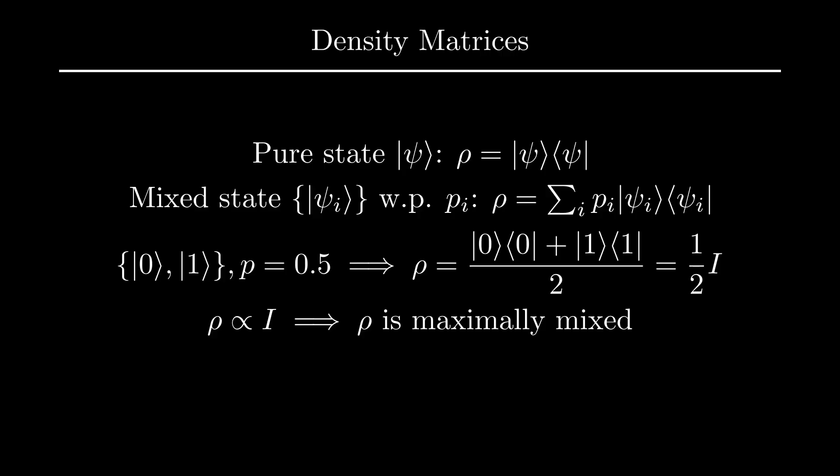In this case, this means that for any pair of orthogonal basis states that we try to measure with respect to, the state will collapse to either state with probability 1 half, regardless of the choice of basis.